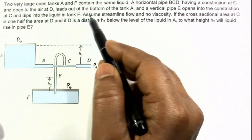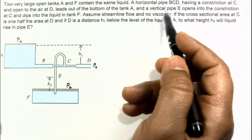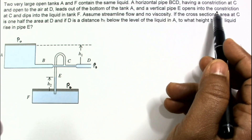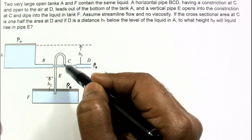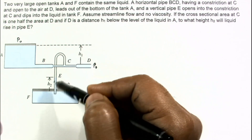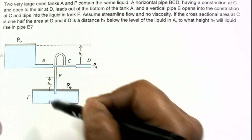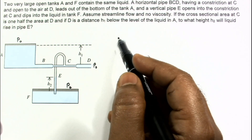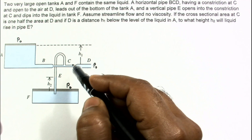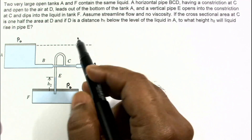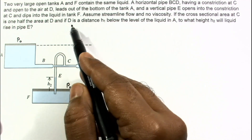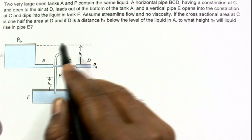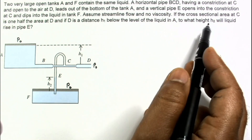A vertical pipe E opens into the constriction at C and dips into the liquid in tank F. Assume streamline flow and no viscosity. The cross-sectional area at C is one half the area at D, and D is at a distance h₁ below the level of liquid in tank A.